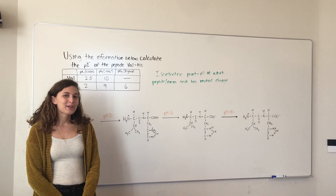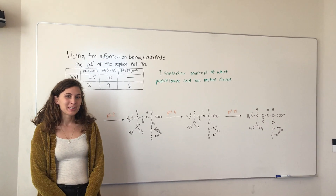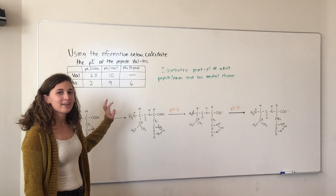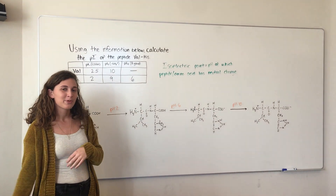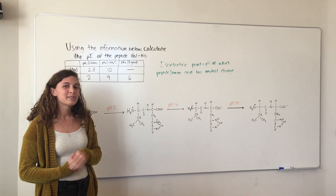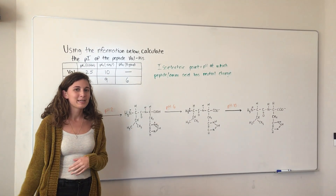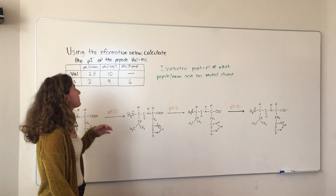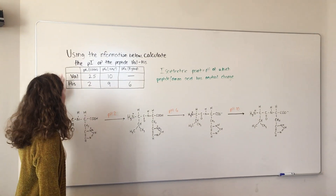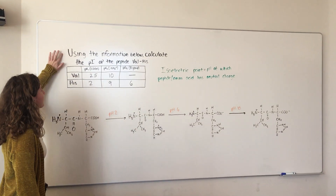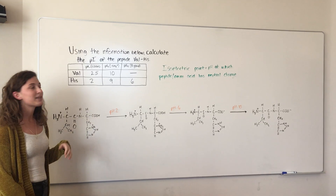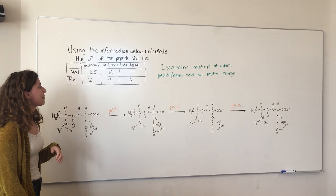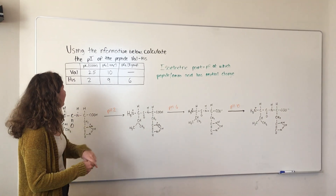Today we're going to talk about how to titrate an amino acid and find the isoelectric point. This is a problem you're going to have on your homeworks and tests, and it can be a little confusing. The question we're going to be doing is: using the information below, calculate the PI of the peptide valine-histidine.